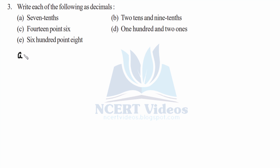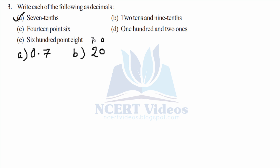Now we have to write the following as decimals. Seven tenths is seven over ten, so it is written as 0.7. Second is two tenths, that is twenty — we have to add it with one tenth — that makes 20.9 because we have nine tenths.